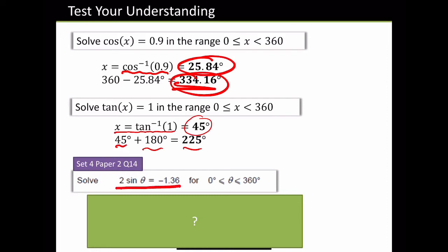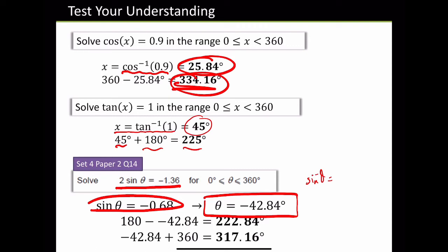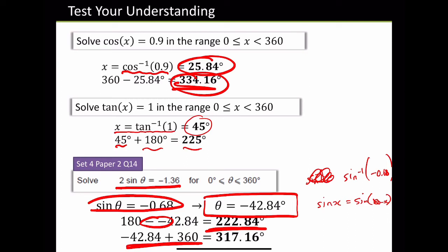Solve 2 sin θ equals minus 1.36. What's the first thing you'd have to do? Divide by 2. So sin θ is now minus 0.68. They've worked it out as θ being minus 42.84, because we've done sin⁻¹ of minus 0.68. Then they've used sin x equals sin(180 − x). Because it's a negative, minus and minus gives you a plus. And it repeats every 360, so it's 317.16. We don't need the one outside 0 to 360.